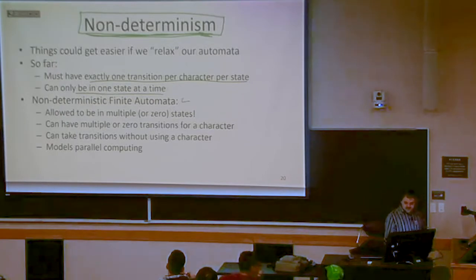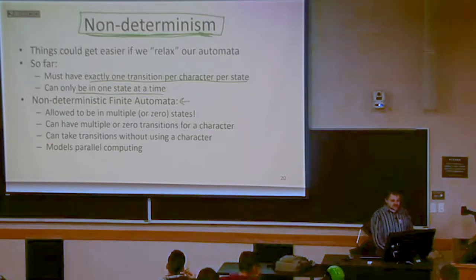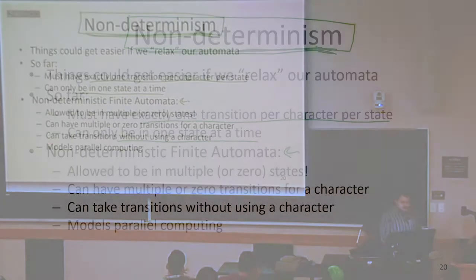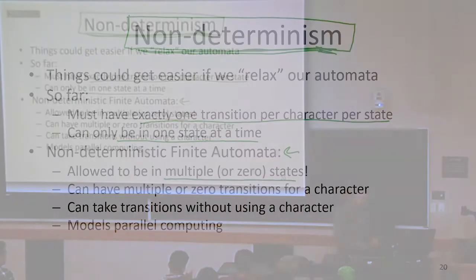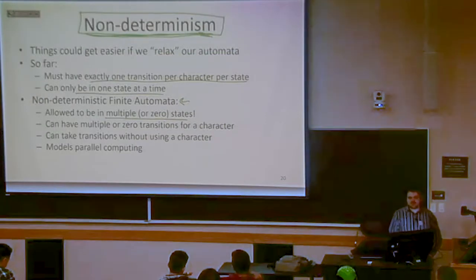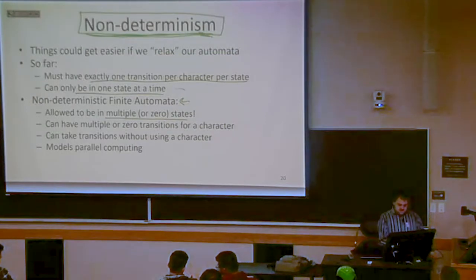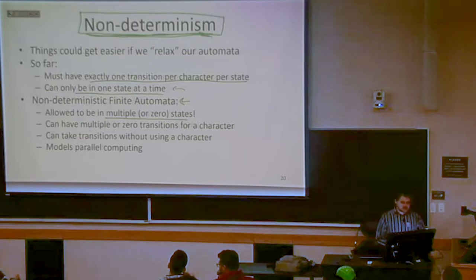The difference we're going to have with non-deterministic finite state automata is you can be in any subset of your states at a time. You can be in any number of states at all at a time — five states, two states, one state, all the states, or none of the states. Any arbitrary subset of the states is allowable, not just one state at a time like we had with the deterministic ones.